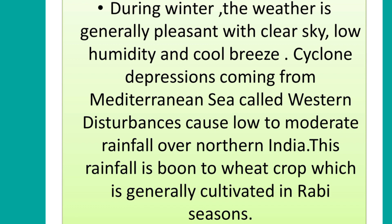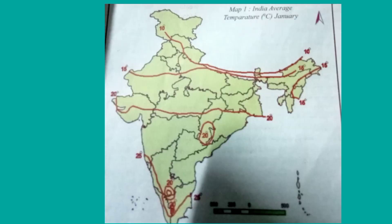This rainfall is a boon to the wheat crop, which is cultivated in the Rabi season. India lies in the trade wind belt of the Northern Hemisphere. Northeast trade winds blow over India from land to sea and are therefore dry. However, some rainfall occurs on the Coromandel coast of Tamil Nadu from these winds as they pick up moisture from the Bay of Bengal while crossing it.